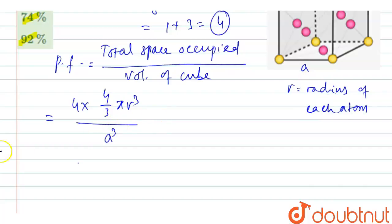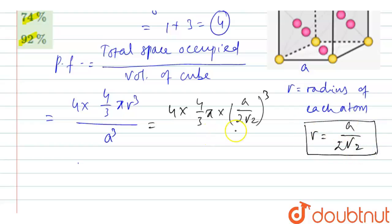Now here, which is nothing but 4 times 4/3 π, where r equals a/(2√2). The relationship between the side length and radius of atom is equal to a/(2√2).